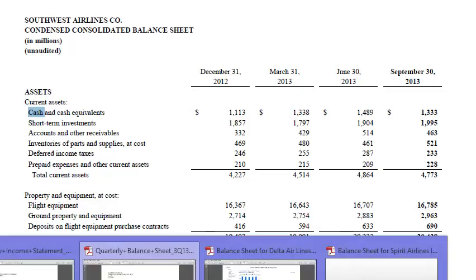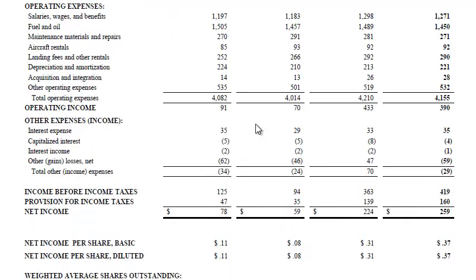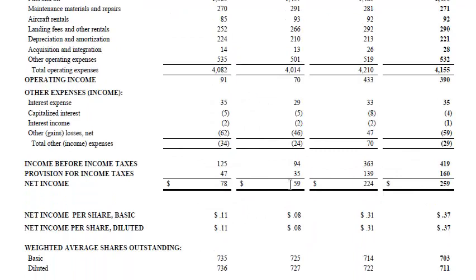Let's take a look at the income statement and see if we can find our answer there. For the same time period, going right down to the bottom line, we can see that during the first three months of 2013, the airline reported net income of $59 million. So they earned $59 million during the quarter. If they earned $59 million and the cash balance increased by $225 million, then where did the rest of the money come from? Obviously the cash flow statement is the place we're going to go to find that answer.